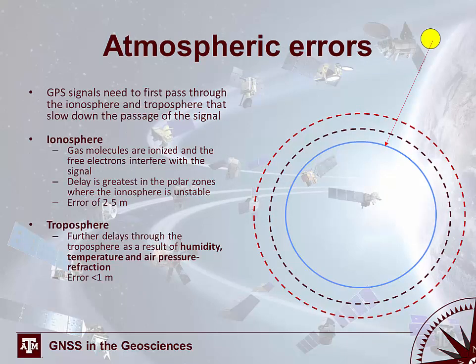Signals travel from satellites to receivers but must pass through atmospheric layers that introduce error into signal propagation. The first is the ionosphere, where ionized gas molecules and free electrons interfere with the signal. This layer affects satellite signal propagation more than the troposphere does. The ionospheric delay is greatest in polar regions where the ionosphere is unstable and active, typically introducing an error of about 2 to 5 meters depending on location.